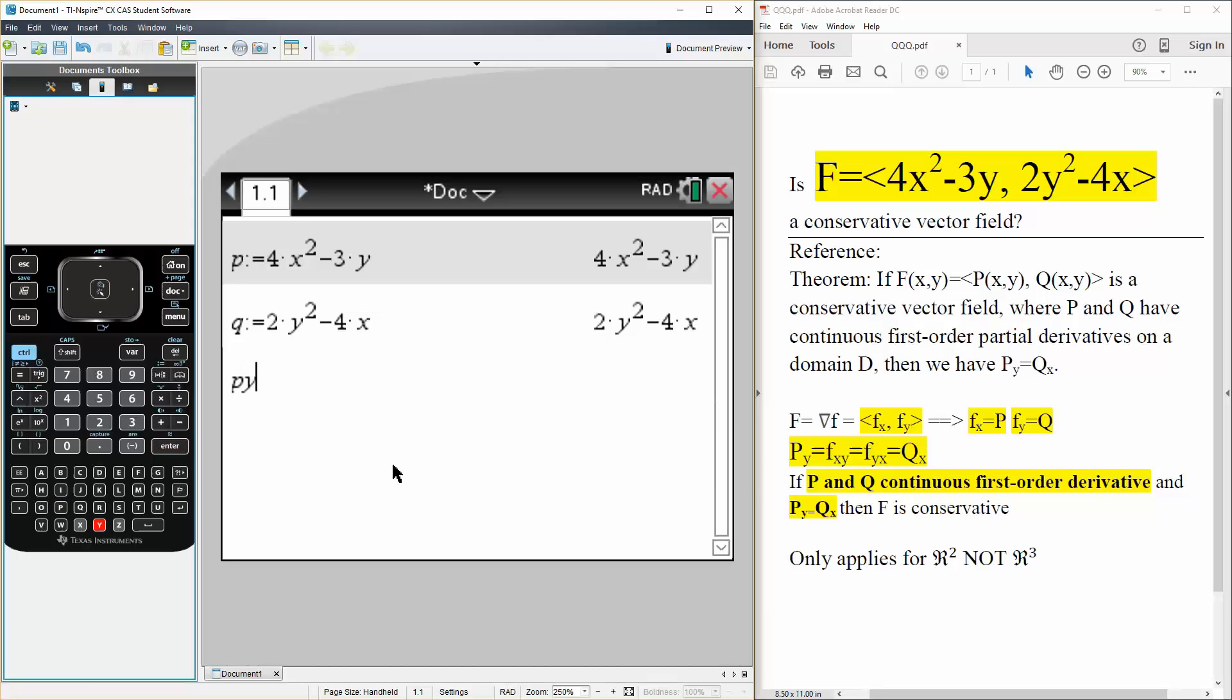So we can say Py is defined as, we want to take the partial derivative in terms of y. So shift minus, and we simply write y for P. Hit enter, we get negative 3. Now we do the same thing for Q.